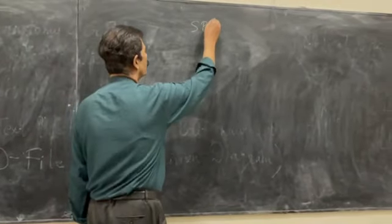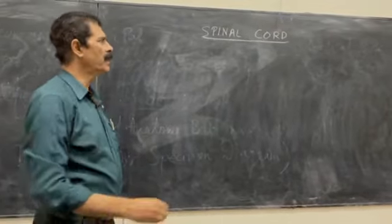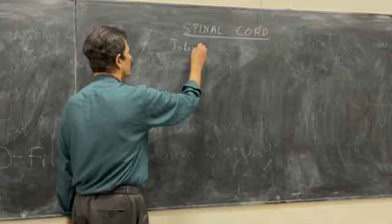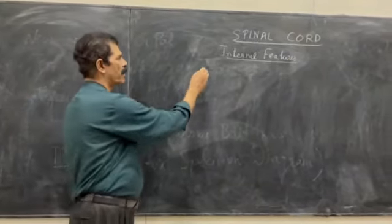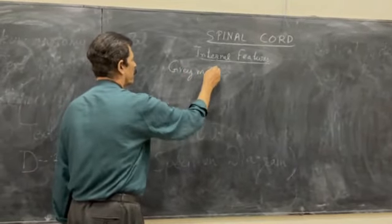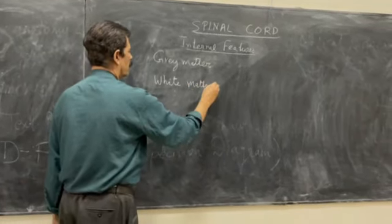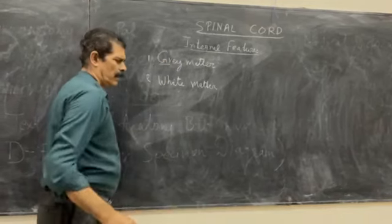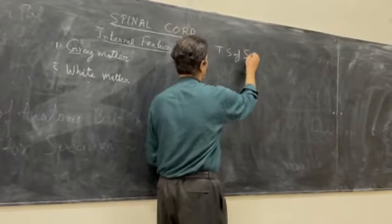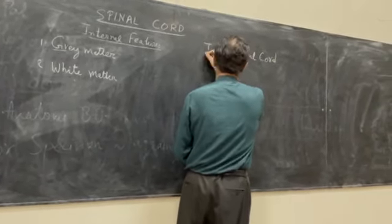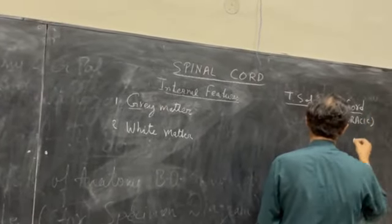Continuing with the spinal cord, as we have finished with the external features, today we will do the internal features of the spinal cord. Every part of the nervous system is made up of gray matter and white matter. To see the gray matter and white matter, we cut the spinal cord and take the transverse section at mid-thoracic level, because it gives a better view of both the white matter and the gray matter.